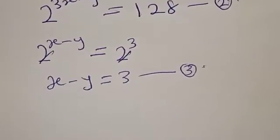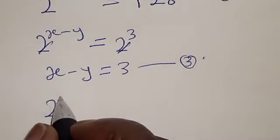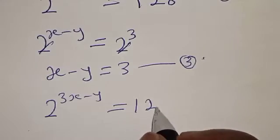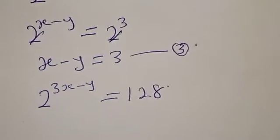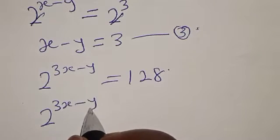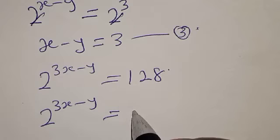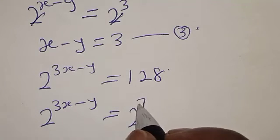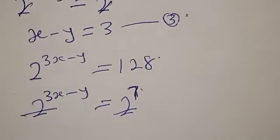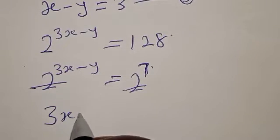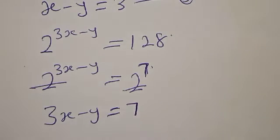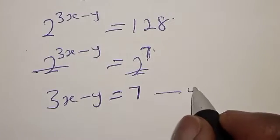Also, from equation 2, we have 2 raised to power 3x minus y equal to 128, which is the same as 2 raised to power 7. They have the same base — the bases cancel. We have 3x minus y equal to 7. Let's call this equation 4.